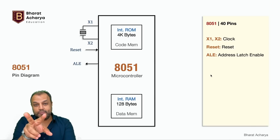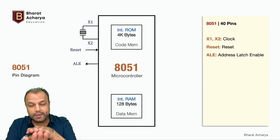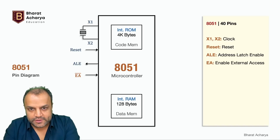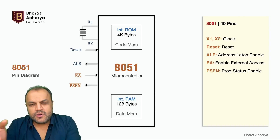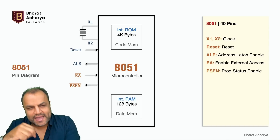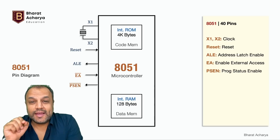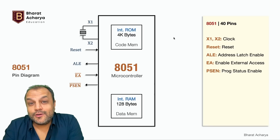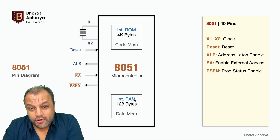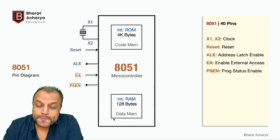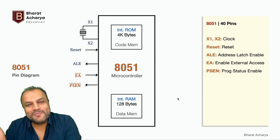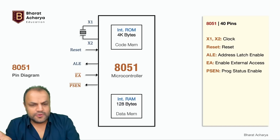8051 gives a signal called ALE — Address Latch Enable. It's used to separate out address and data, since address and data go in multiplexed form. ALE is the signal that separates them. EA bar and PSEN bar — bar means active low — these signals are used to control the external ROM.